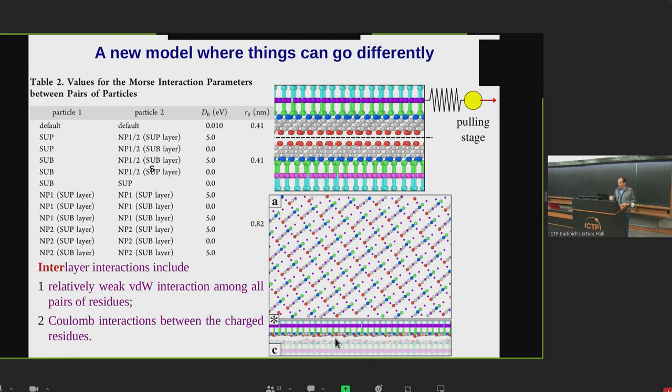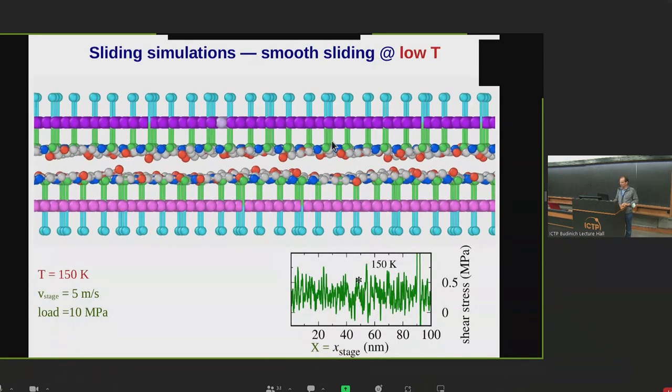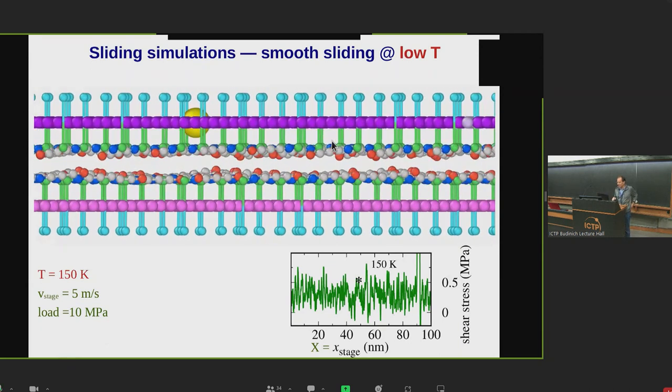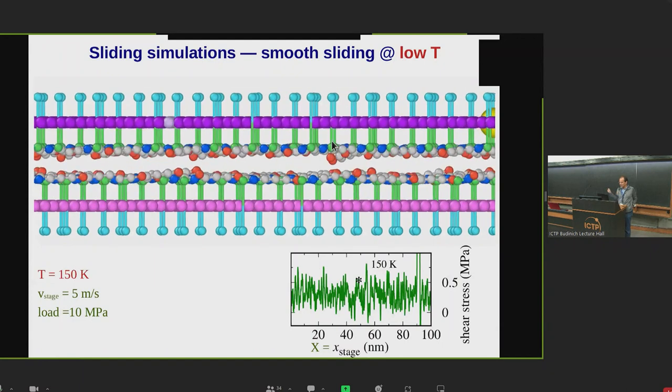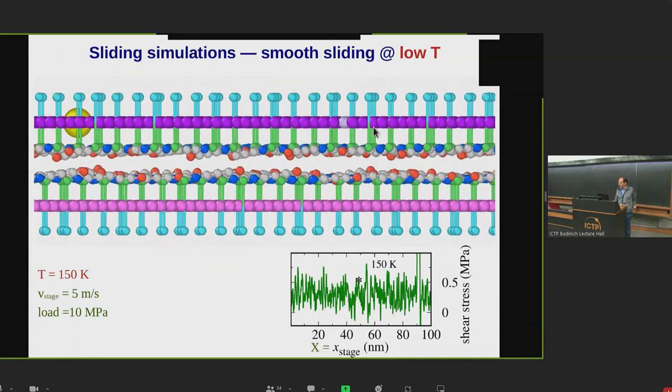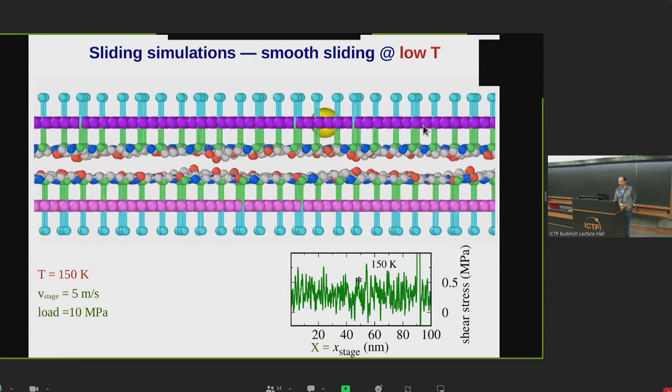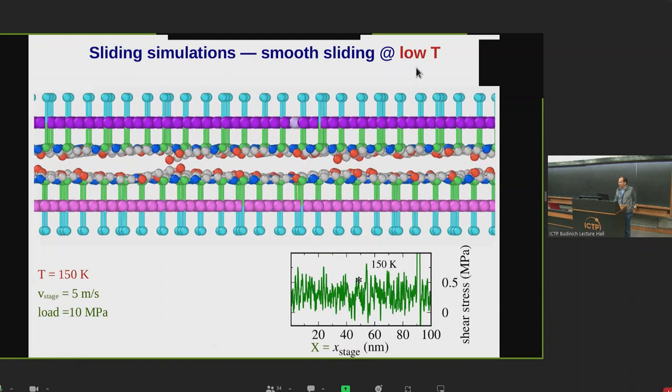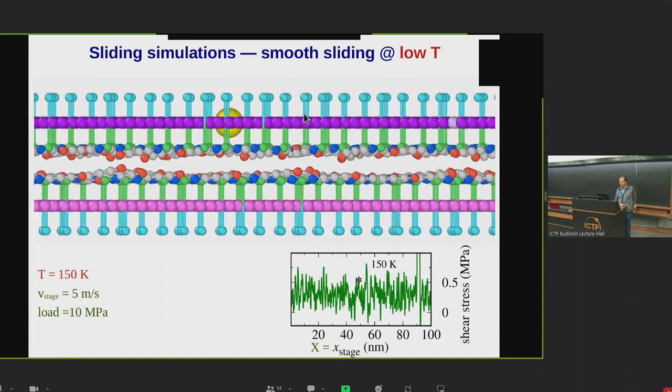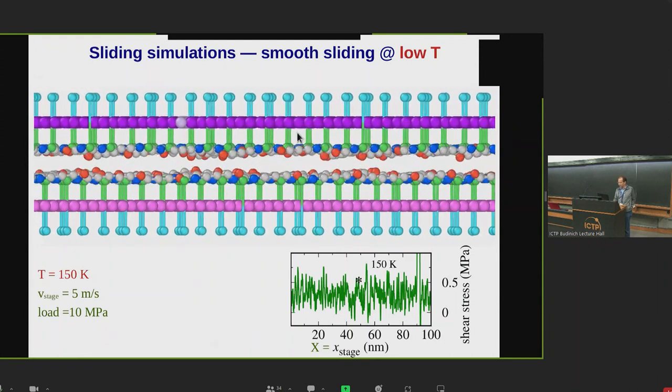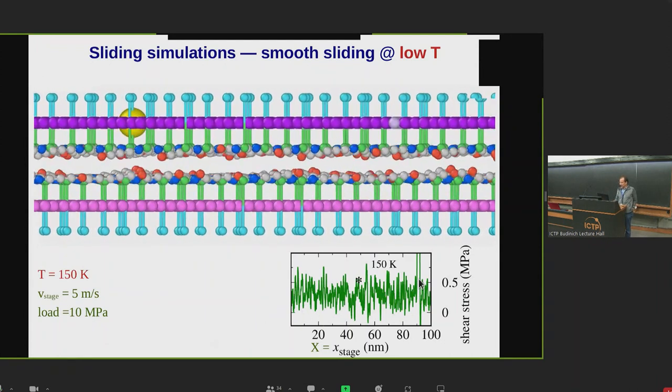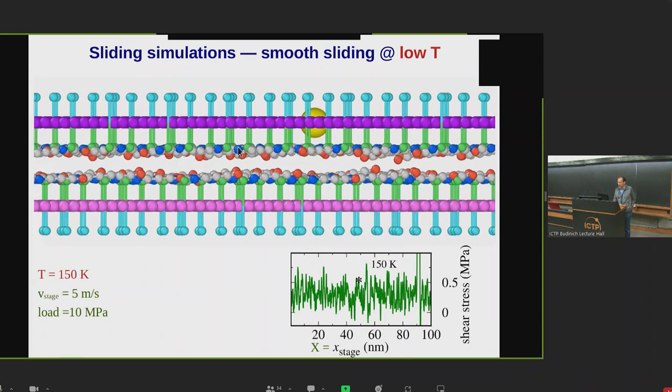The interlayer interactions tend to be those responsible for friction, and they include, on top of this van der Waals-Morse interaction, also these coulombic repulsions, because there are positive and negative charges in both layers. When we start to pull this molecular model through the spring, if we do it at reasonably low temperature, like 150 K, this advances smoothly. You see that there's very little stick-slip, it essentially advances smoothly. This is the force trace, and we get a very, very small friction, due to those layers being quite flat.